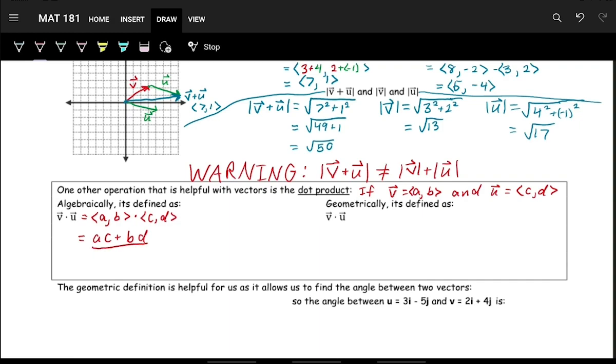So this is how we do the dot product algebraically. Geometrically, what it means is this. So let's say we have vector v here, and then we have vector u down here.